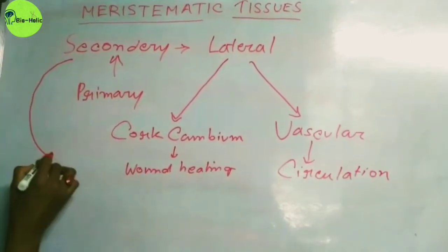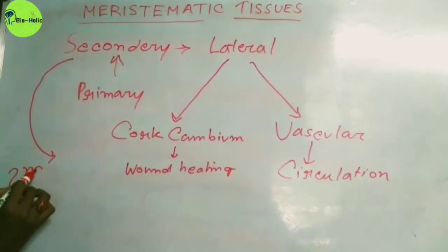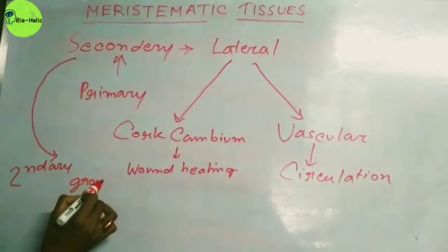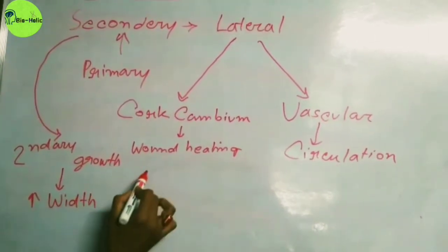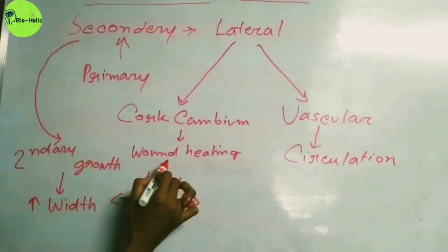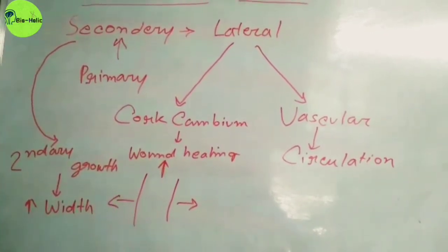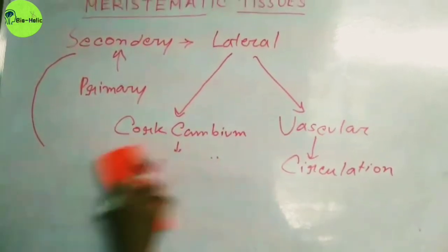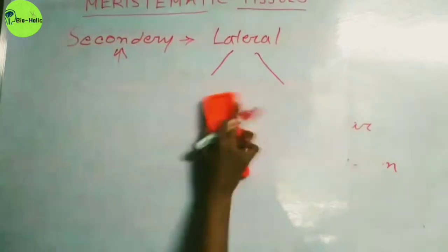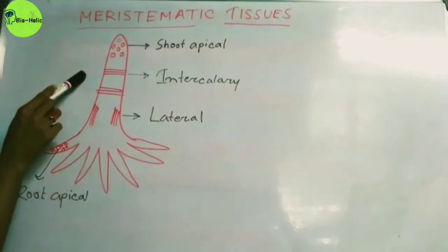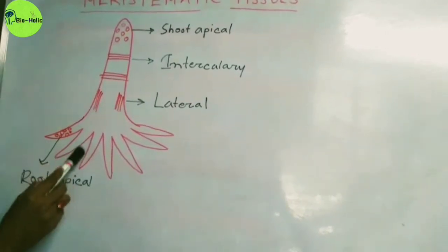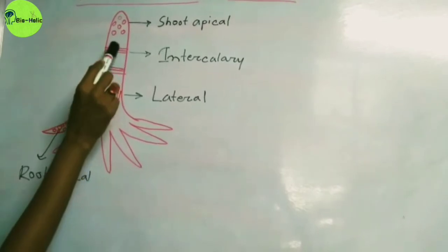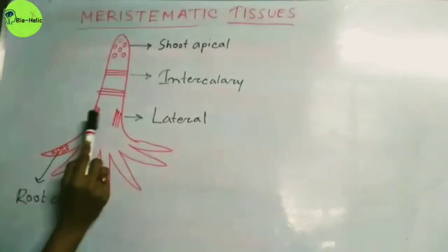These secondary meristematic tissues are related to the secondary growth in plants, meaning they increase the width of the plant. The apical meristematic tissue is related to increasing the height of the plant. Looking at a diagram of a plant, this is the shoot apical meristematic tissue, this is the root apical meristematic tissue, these two are the intercalary meristematic tissue, and this is the lateral meristematic tissue.